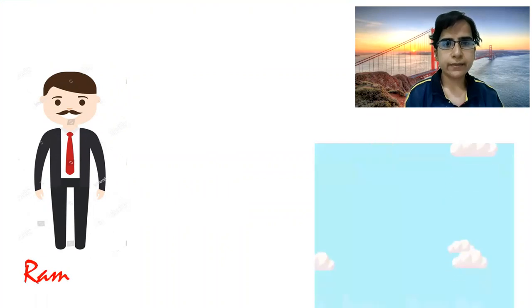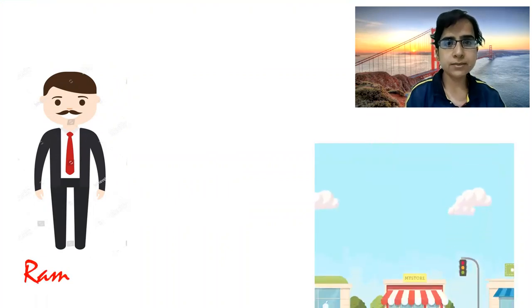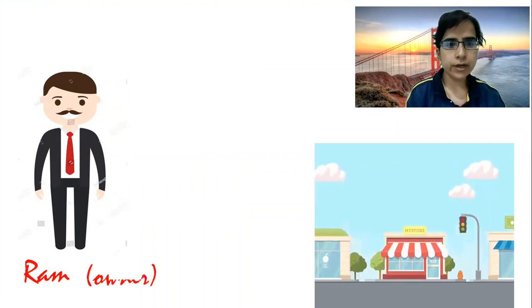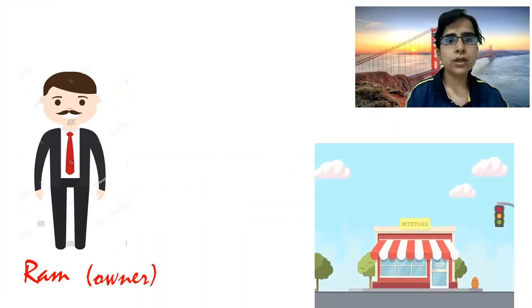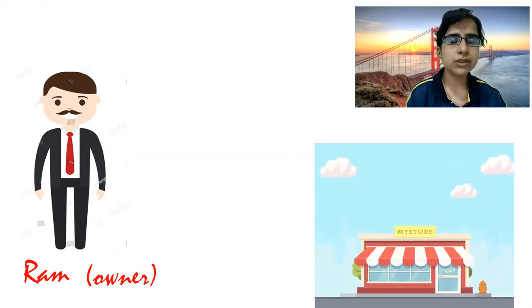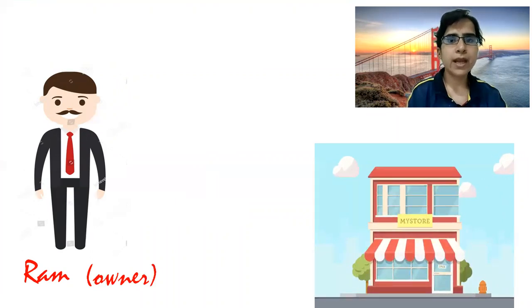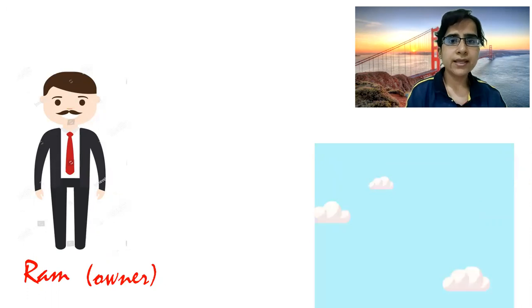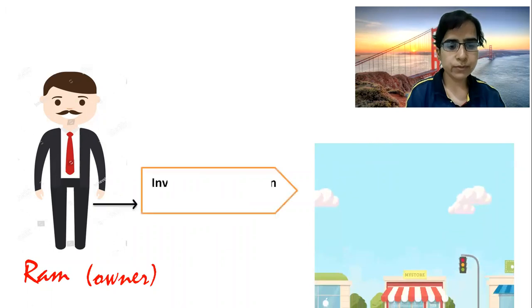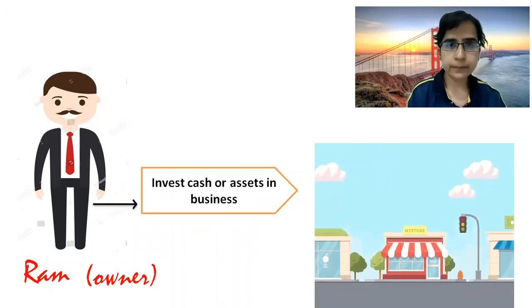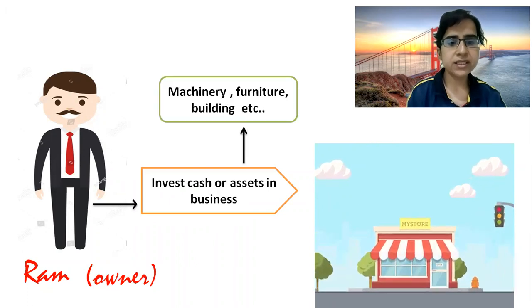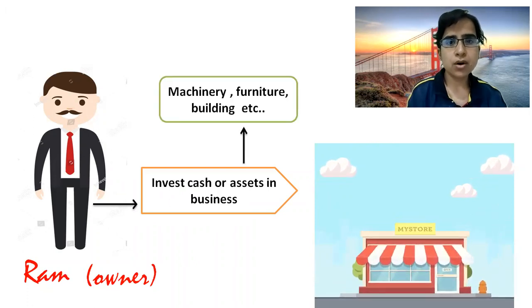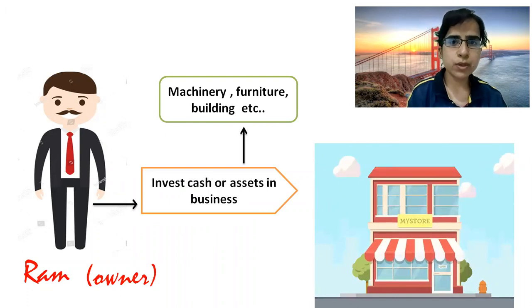There is a person named Ram, and Ram has to start a business. For opening the business, he will be the owner. His requirements for commencing a business would include cash, furniture, any other machinery or other equipment — assets which will be used in the business as property.